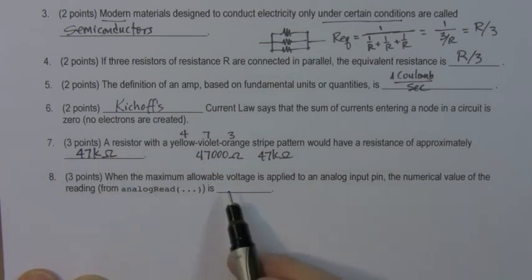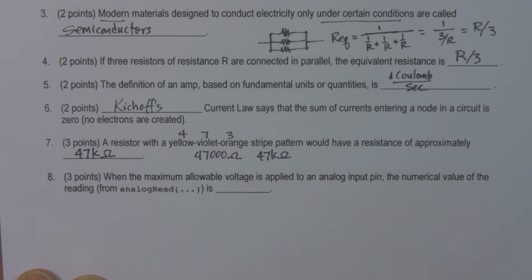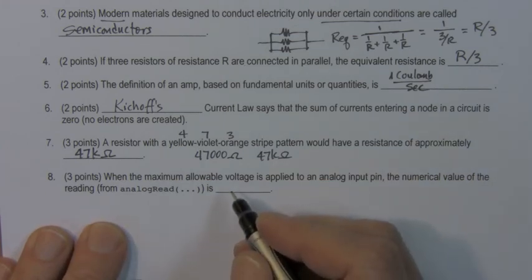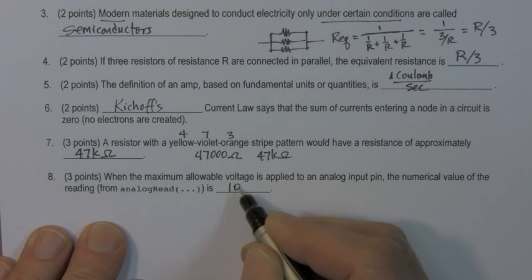Number eight. When the maximum allowable voltage is applied to an analog input pin, the numerical value of the reading is what? This is a hint here, analog read. The maximum reading from analog read is a 10-bit value. The value is 1023.